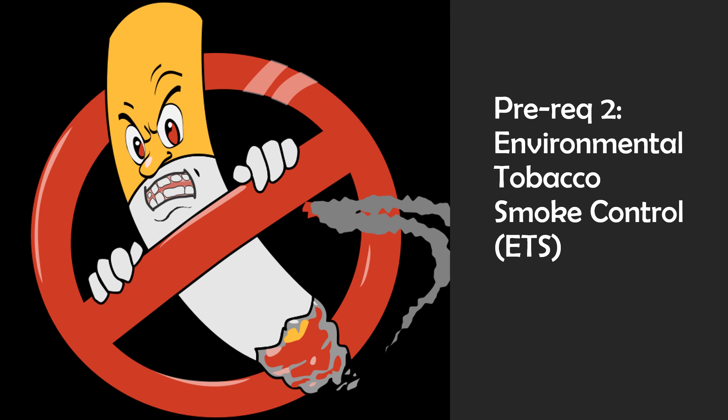Prereq two is no smoking. You need to prohibit smoking inside the building and prohibit smoking outside the building except in designated smoking areas located at least 25 feet from all entries, outdoor air intakes, and operable windows. You also need to prohibit smoking outside the property line in spaces used for business purposes. Signage must be posted within 10 feet of all building entrances indicating the no smoking policy. Smoking includes tobacco smoke, smoke produced from the combustion of cannabis and controlled substances, and the emissions produced by electronic smoking devices. Be sure you know the distance requirements.